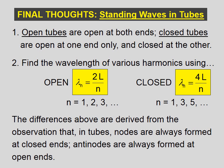Open tubes are open at both ends. Closed tubes are open at one end only and closed at the other. We find the wavelength of various harmonics using these equations for open tubes and closed tubes. Notice, for an open tube, all positive harmonics are applicable. For closed tubes, only the odd harmonics. The differences above are derived from the observation that, in tubes, nodes are always formed at closed ends; antinodes are always formed at open ends.